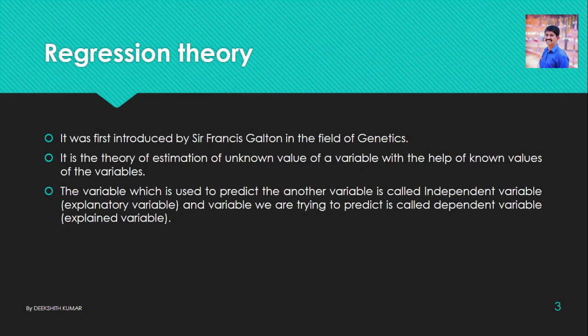Regression theory. This theory was first introduced by Sir Francis Galton in the field of genetics. Regression theory is a theory of estimation of unknown values of a variable with the help of known values of another variable. This theory was developed by Francis Galton and is very simple. It is the estimation of an unknown value of a variable with the help of known values of another variable.